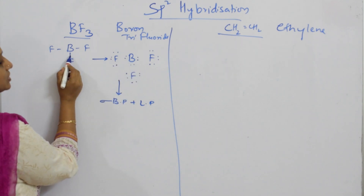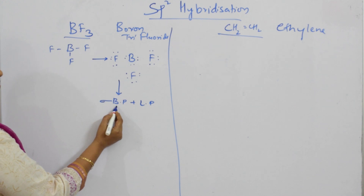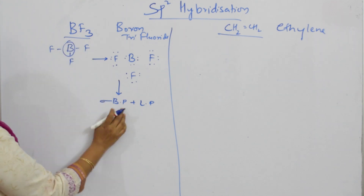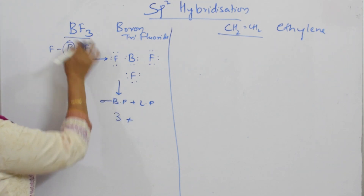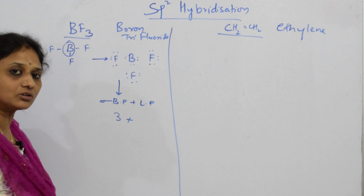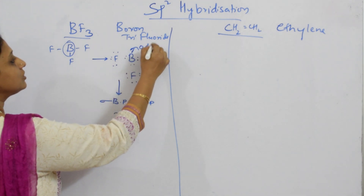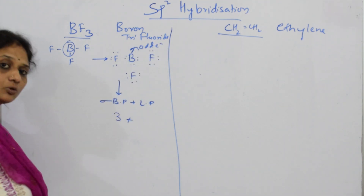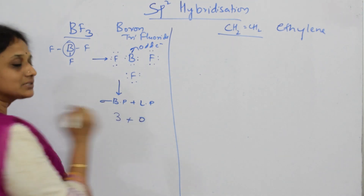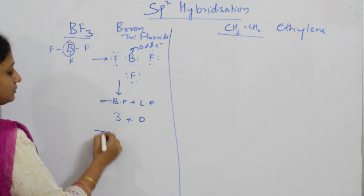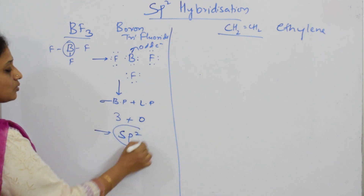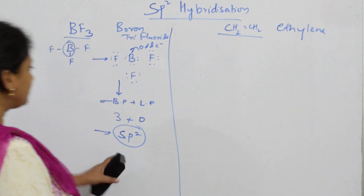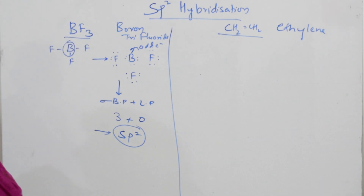For BF3, boron is the central atom. How many sigma bond pairs are around boron? There are three bond pairs. Do we have any lone pairs? Since boron is electron deficient, lone pairs are zero. So sigma bond pairs plus lone pairs equals three. Three means SP2 hybridization — because 2 + 1 = 3. That is how we confirm it is SP2 hybridization.